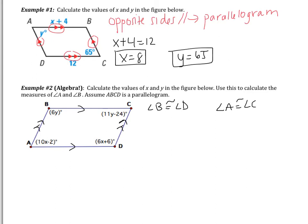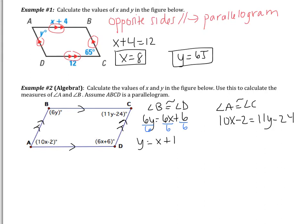Congruent means their measures are equal. So I have 6y equals 6x plus 6, and also 10x minus 2 equals 11y minus 24. I need to solve for both x and y, so I need two equations — which I have. I'll solve the system using substitution or elimination. On the first equation, 6y, 6x, and 6 are all divisible by 6, so dividing through gives y equals x plus 1. Since I have y isolated, I'll use substitution.